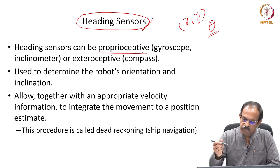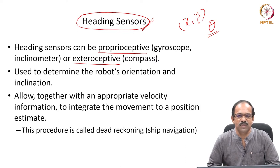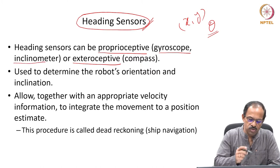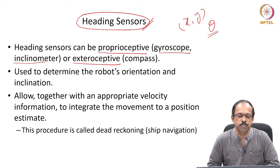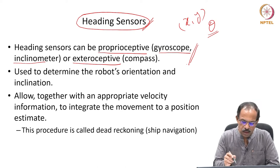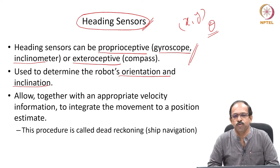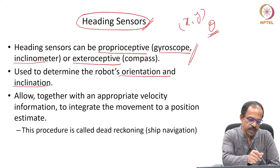Heading sensors can be either proprioceptive or exteroceptive. Proprioceptive sensors use internal information to find orientation, while exteroceptive sensors use external references. Gyroscopes and inclinometers are commonly used proprioceptive heading sensors, and the compass is an exteroceptive sensor because it uses magnetic field information to get orientation. The inclinometer is primarily used for measuring inclination — apart from theta in the x-y plane, when the robot is traveling over a slope, you want to know the inclination, which can be obtained using the inclinometer.